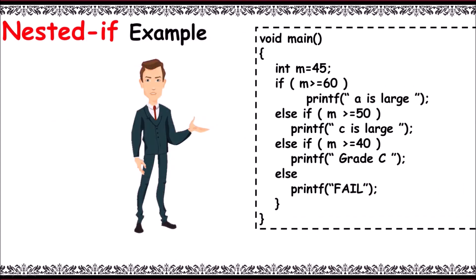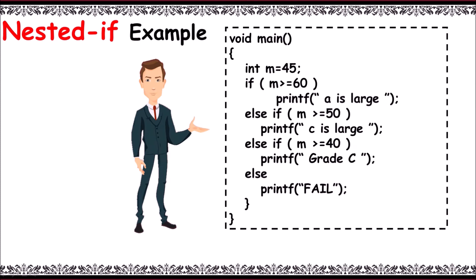check 45's grade. For this, first 45 is assigned to m and checked with the condition m greater than or equal to 60. That is, 45 greater than or equal to 60. As it returns false, control checks another condition with else-if: m greater than or equal to 50. As 45 greater than or equal